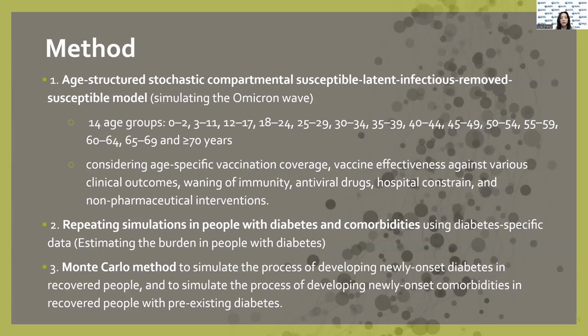It is based on the assumption that individuals in the population can be classified into four compartments: susceptible, latent, infectious, and removed. Our model accounts for factors like the rate of vaccination, the efficacy of the vaccine, the decrease in immunity over time, and the limitation of hospital resources.